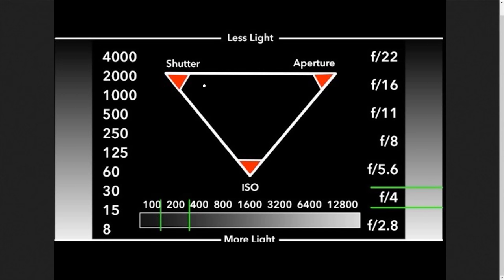But for today, we'll only be talking about things on the camera side, so let's focus on ISO, shutter, frames per second, and aperture. Let's head over to my computer and get it cracking. So right now we're looking at what's called the triangle of exposure.